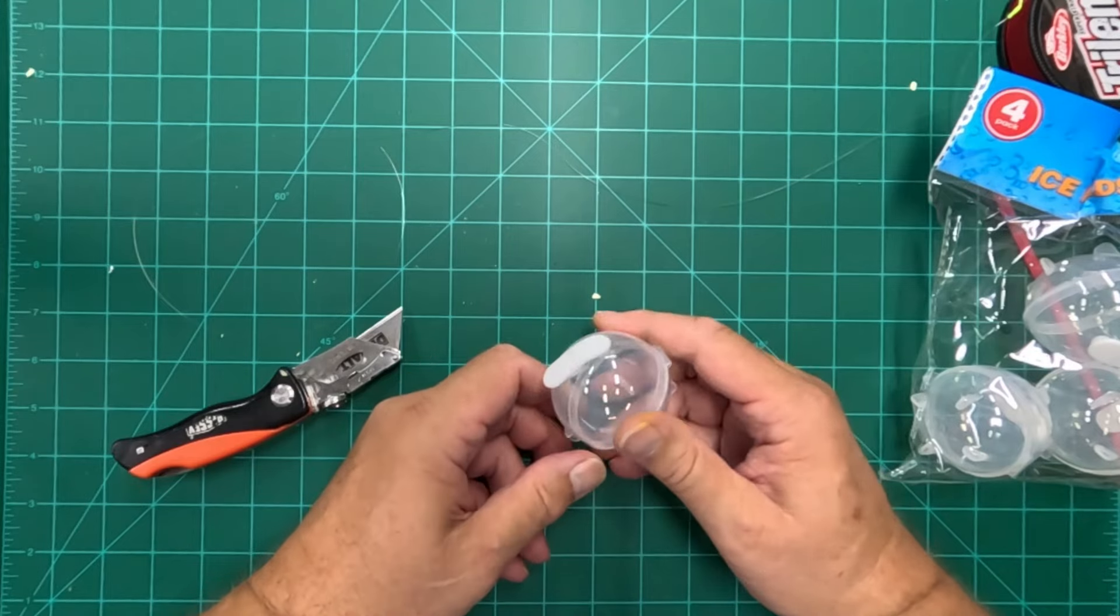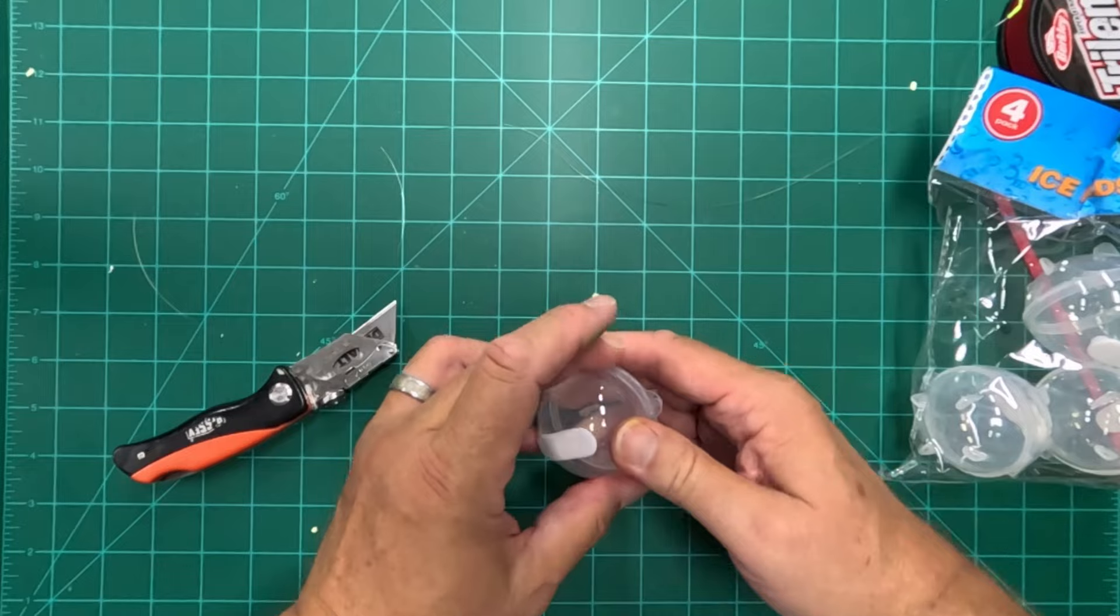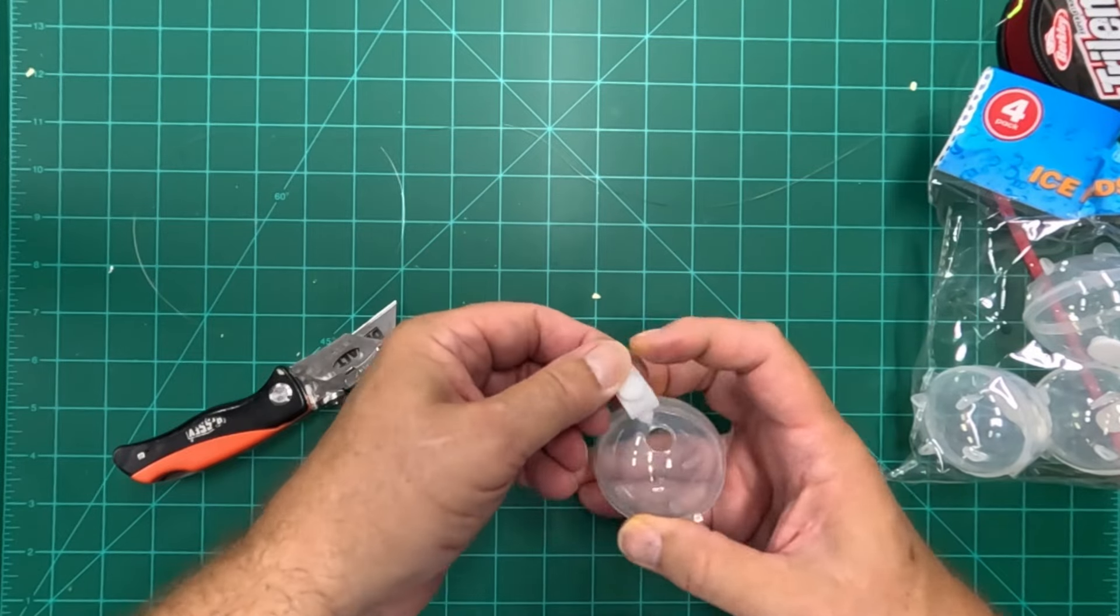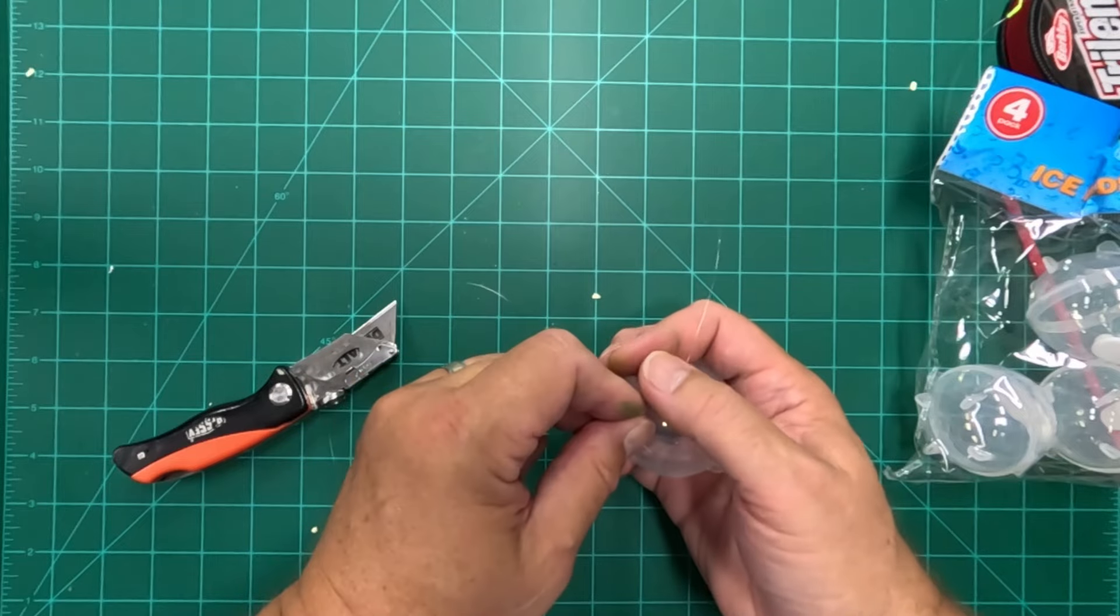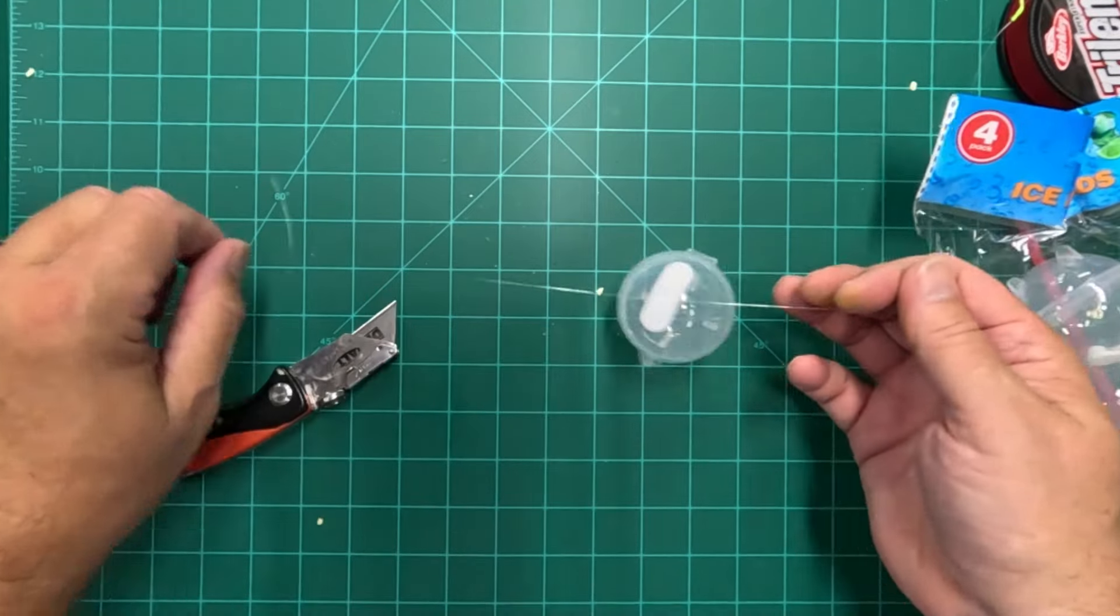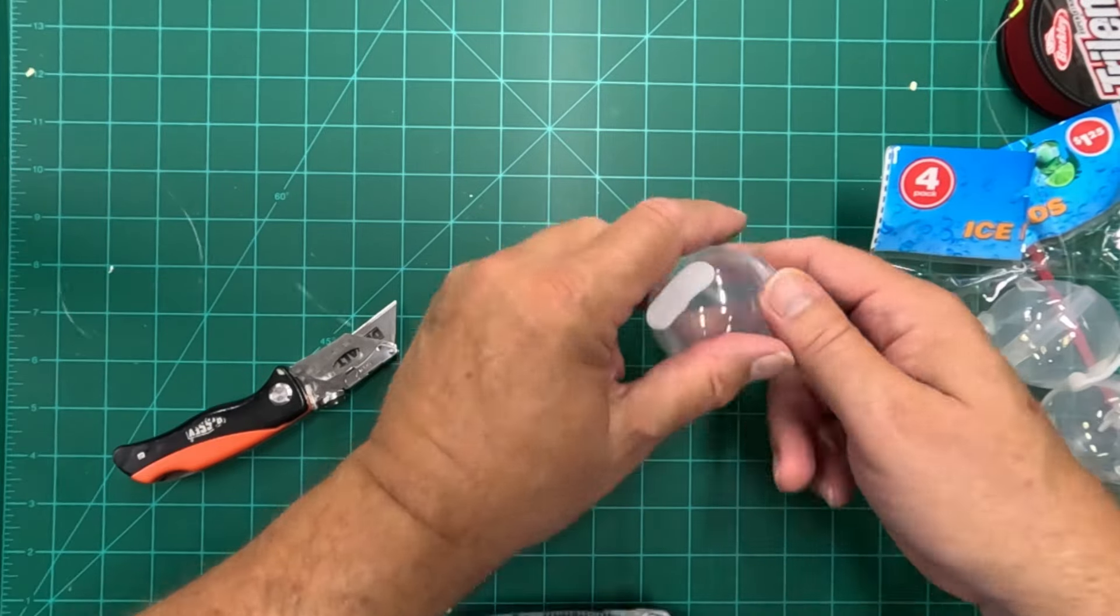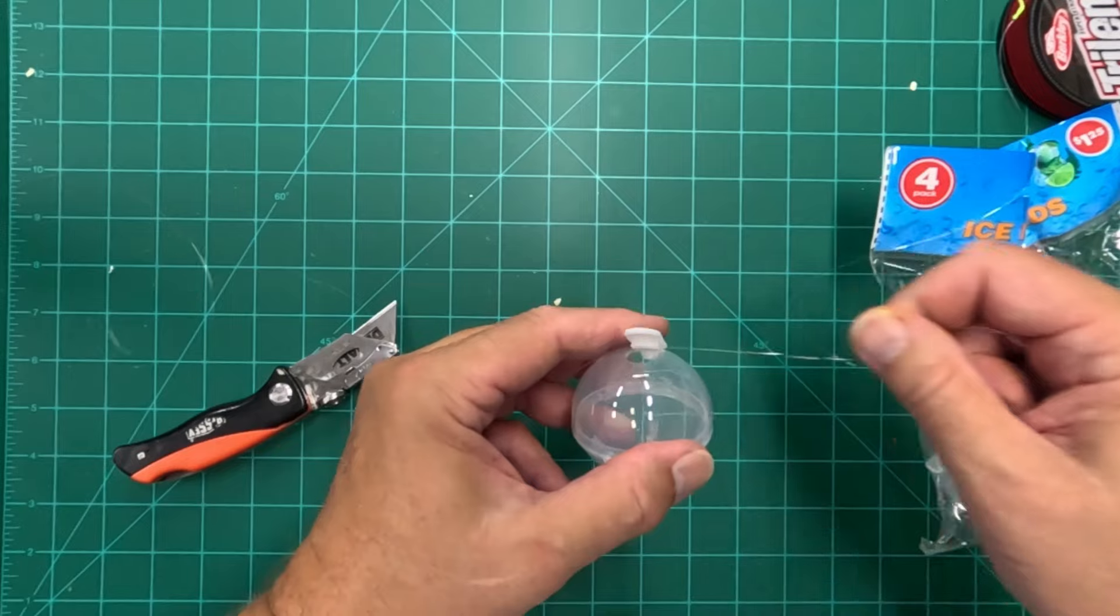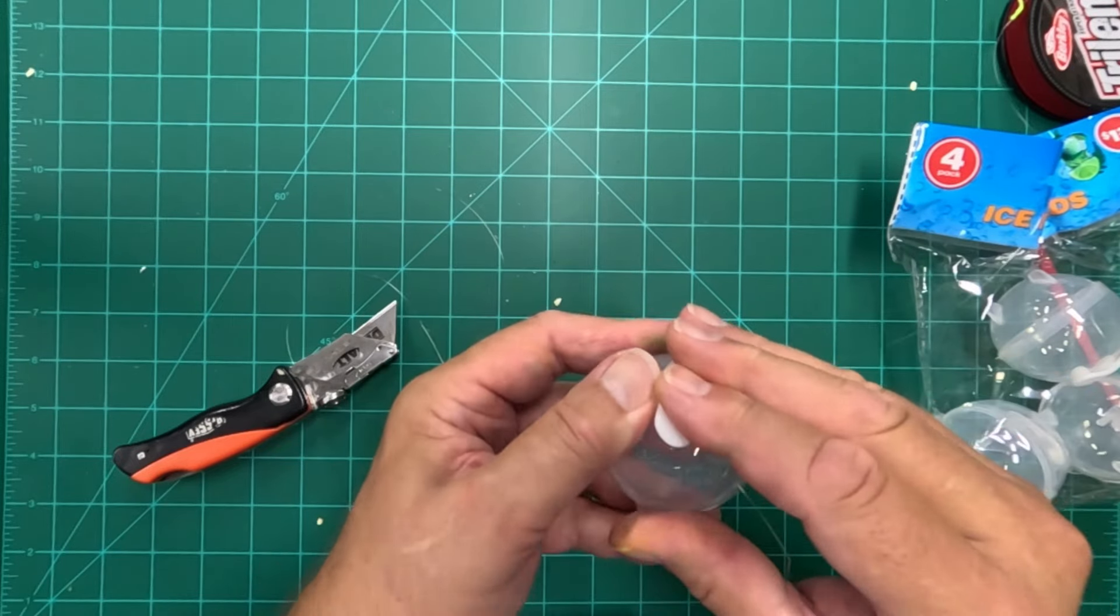And when I saw these, what really caught my eye was these could be a nice bobber. For one thing, you open your filler opening for your ice, you can push your line in there, and that's going to stay on your line. If you want to move it up and down, you just open it, slide it up and down, and you can peg it to your line once again.